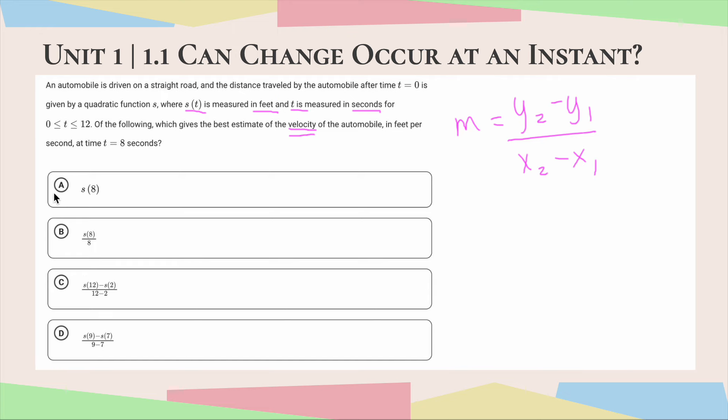Immediately looking through my answer choices, I'm eliminating A and B because they don't fit this model at all. So now I'm left with C and D.